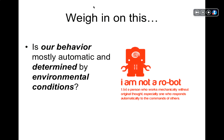In classical conditioning models, we learn associations between stimuli and responses. B.F. Skinner came up with another model of learning known as operant conditioning, which essentially states that we are, in essence, a product of our environment.